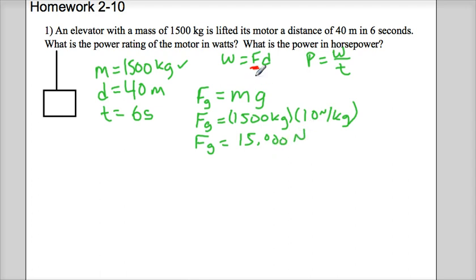Okay. So, now we have this force, so it's pretty easy to calculate the work. As we move on here, the work is simply the force, which is 15,000 newtons times the distance traveled. And the distance is 40 meters.